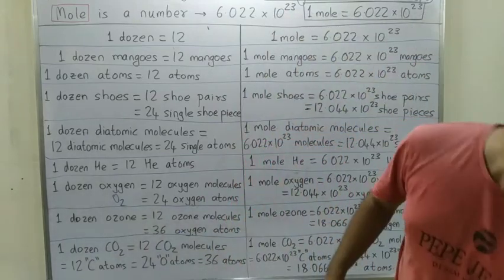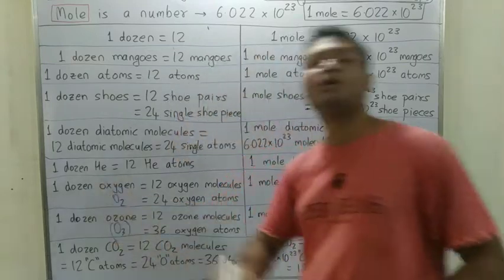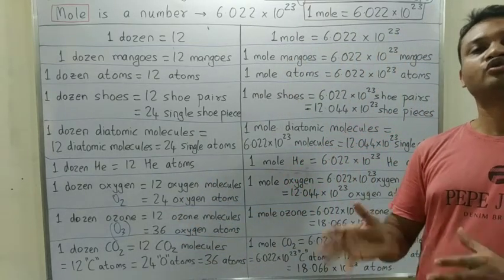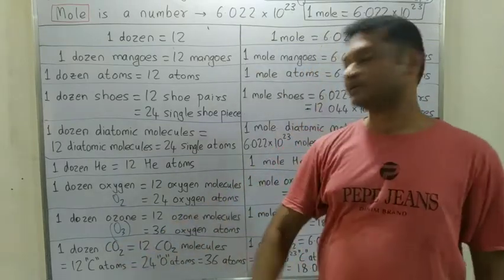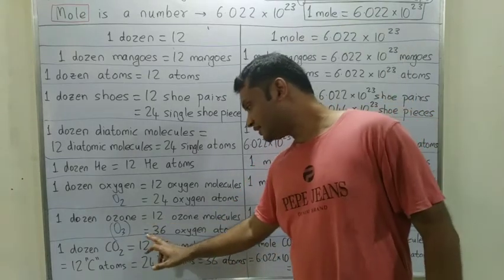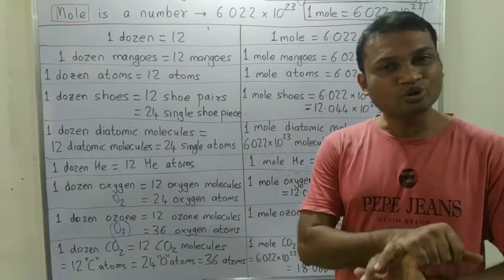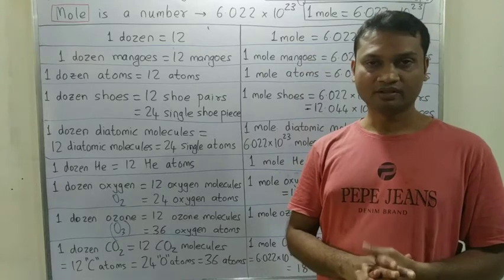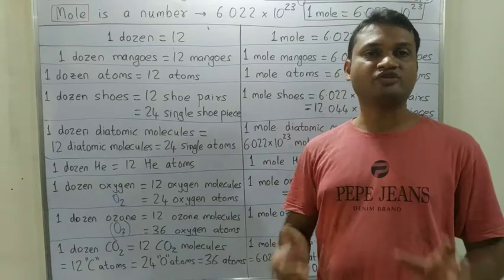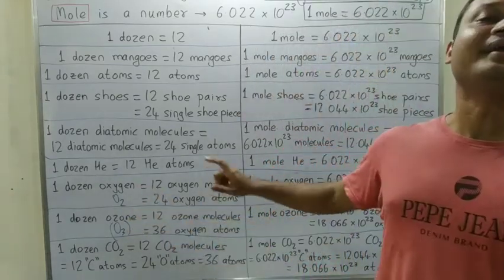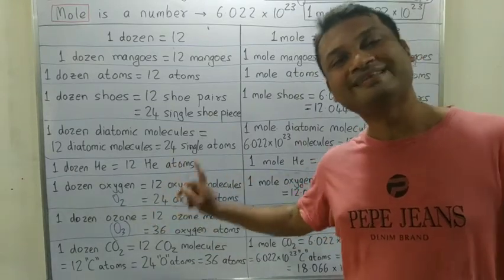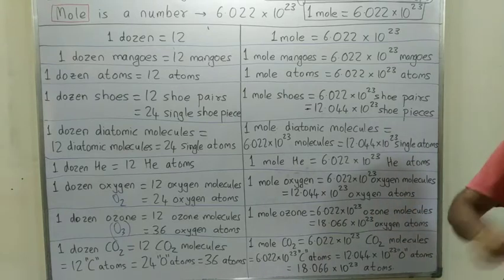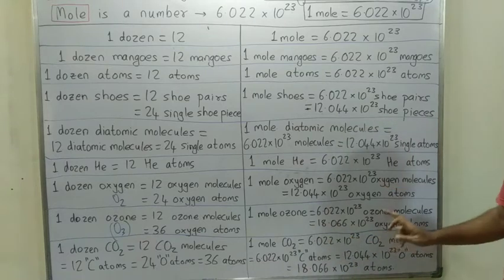Then we talk about the next case — one dozen ozone. Ozone is O3. One dozen ozone means 12 ozone molecules. Now one molecule has 3 oxygen atoms, so 12 into 3 = 36 oxygen atoms. One ozone molecule is 3 oxygen atoms. So 12 ozone molecules = 36 oxygen atoms. One mole ozone = 6.022 into 10 raise to 23 ozone molecules, which is 3 times = 18.066 into 10 raise to 23 oxygen atoms.